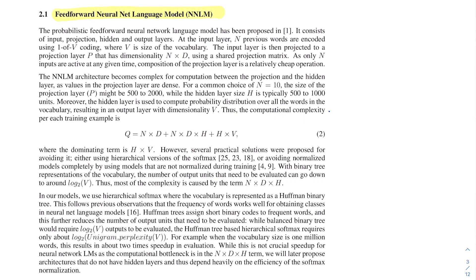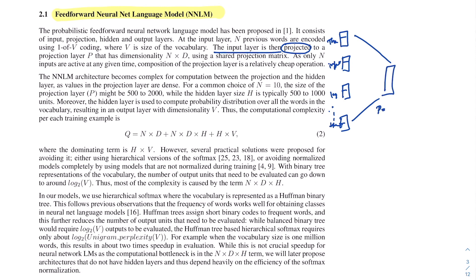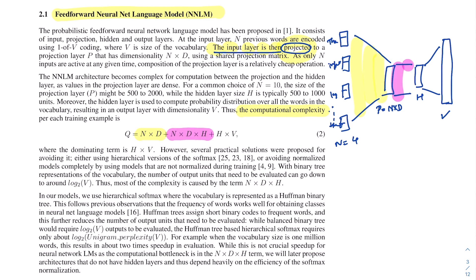The next section covers the feed-forward neural network language model proposed by Bengio in 2003. Its task was to predict the next word in a sequence. The model encoded each word as a one-hot vector, then projected it into a projection layer of dimension N×D, followed by a hidden layer of dimension H, and an output layer of dimension V (vocabulary size). The computational complexity per training example is N×D + N×D×H + H×V.